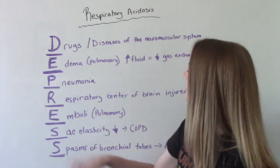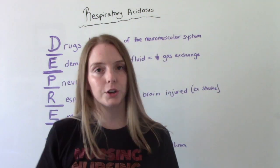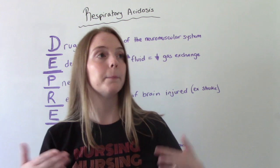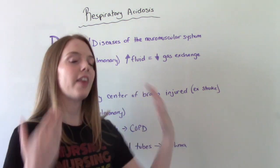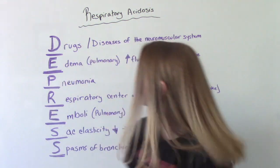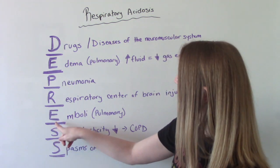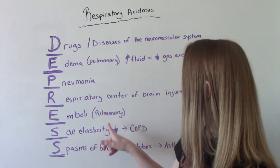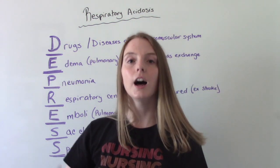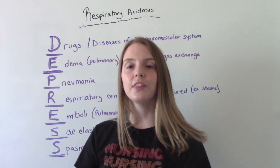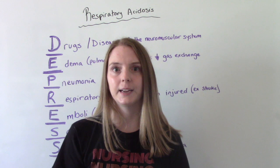R — the respiratory center of the brain has been injured in some way, maybe due to something like a stroke, and that can throw off your breathing. E is for emboli, specifically a pulmonary emboli — a PE — a blood clot that's traveled to the lungs, which can impair your breathing.